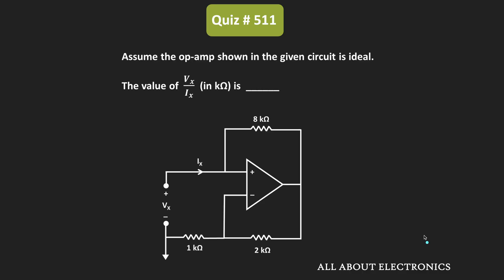Hey friends, welcome to the YouTube channel all about electronics. So in this question, we have been given the op-amp based circuit and we have been given that the op-amp in the given circuit is the ideal op-amp. So here for the given circuit, we have been asked to find the value of this Vx divided by Ix.